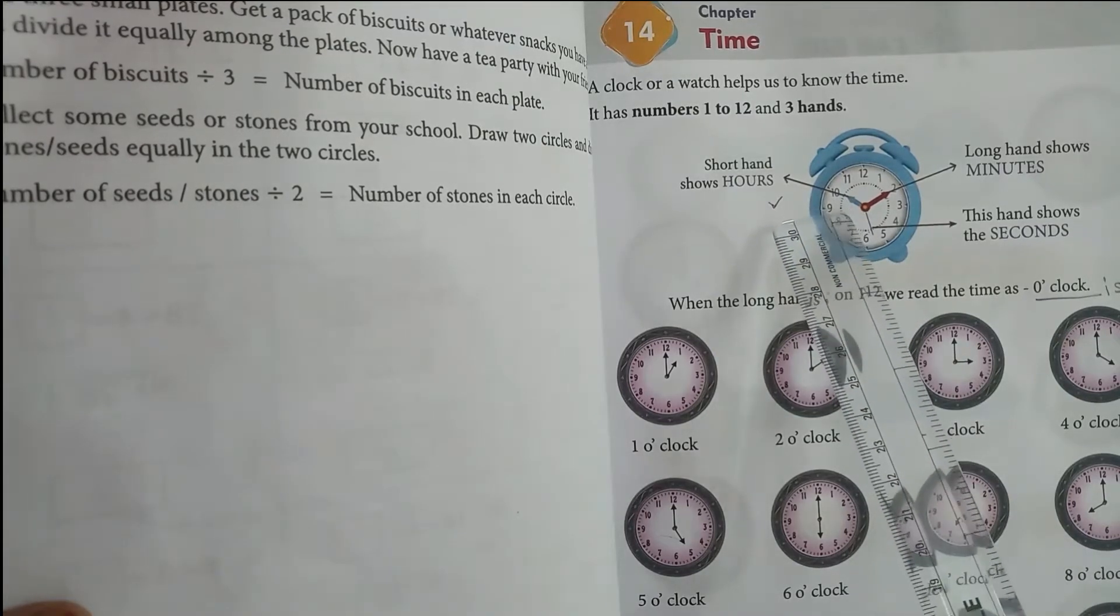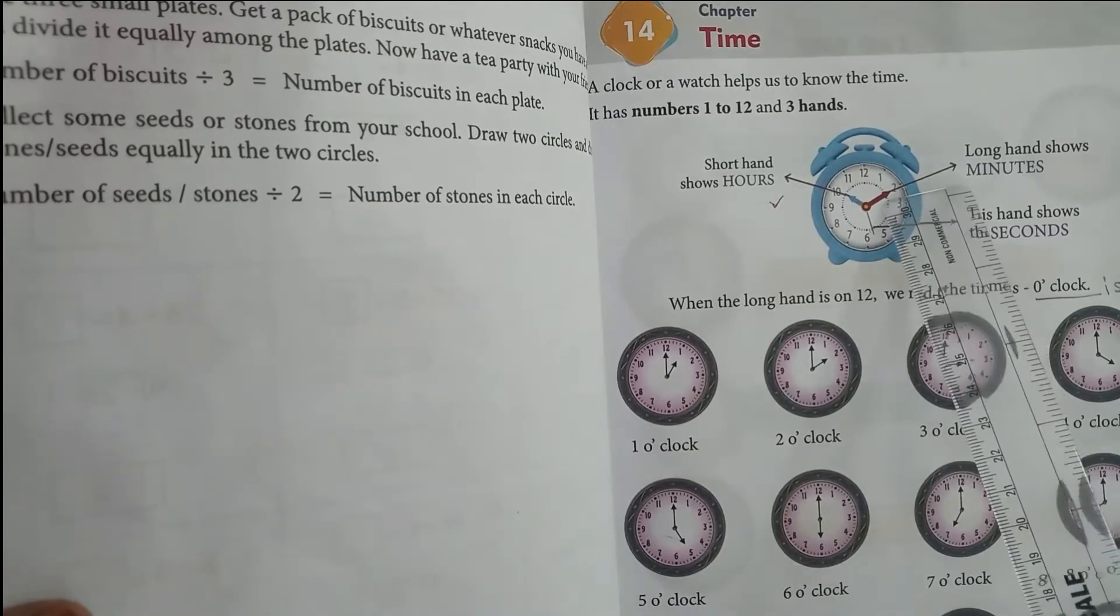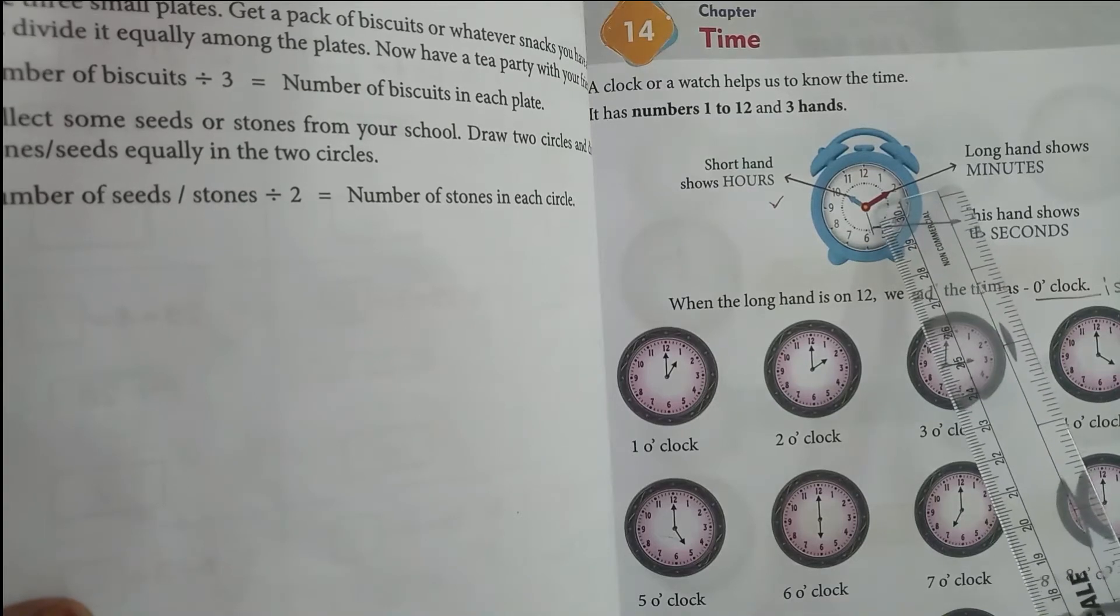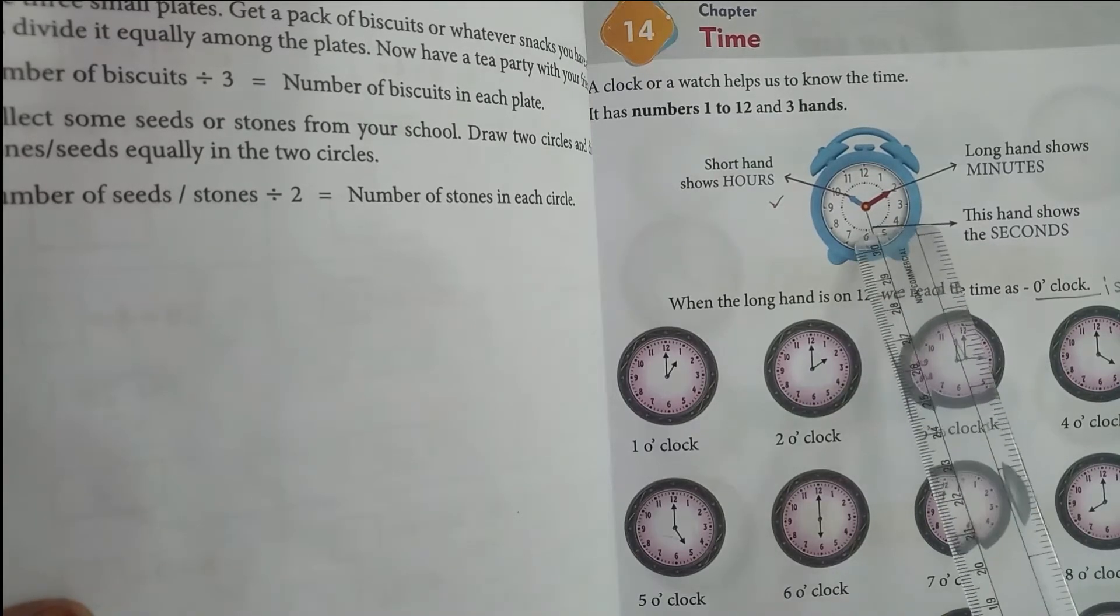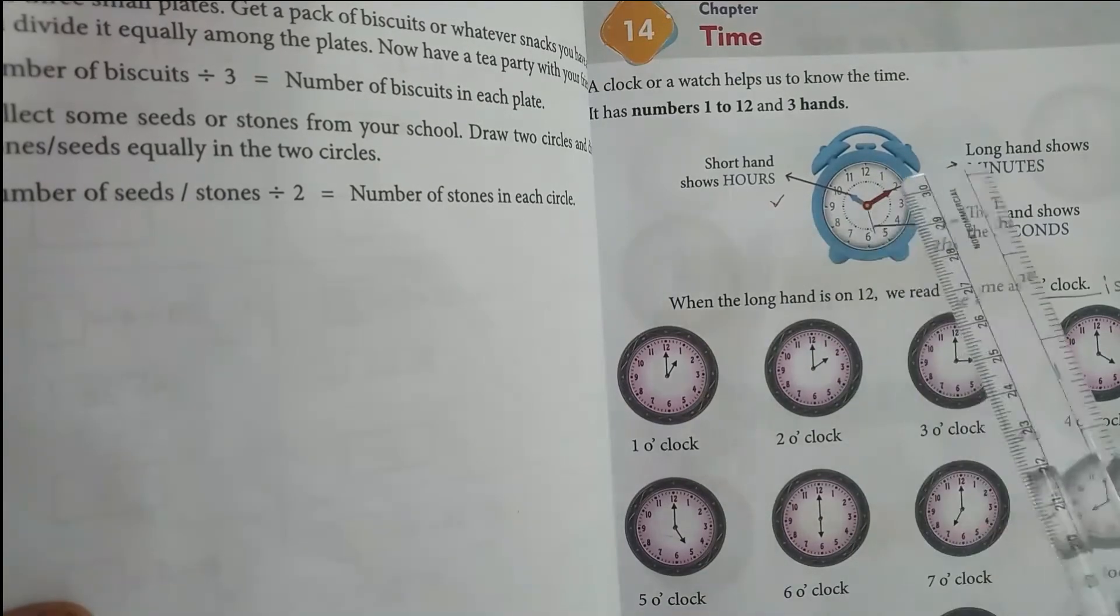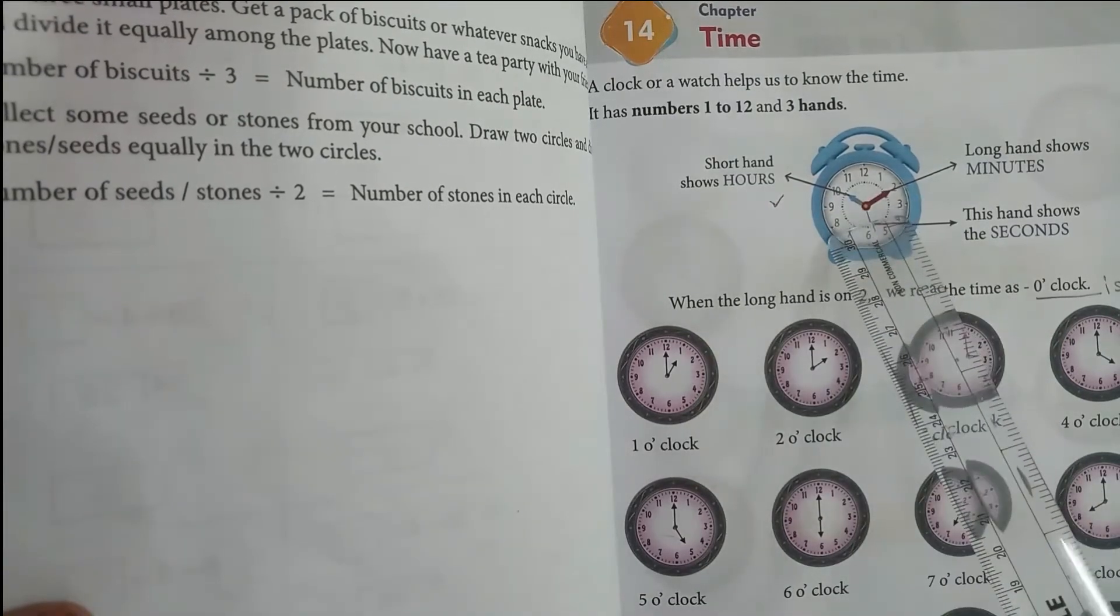Now this red color hand is the long hand. This shows minutes. And this black hand shows the seconds. This rotates continuously without stopping.